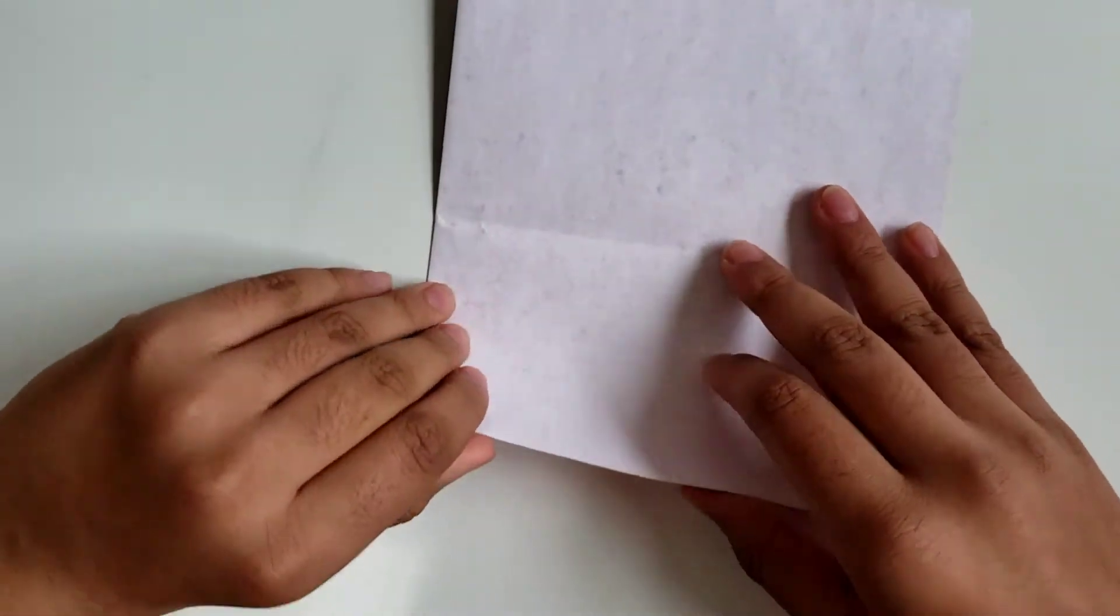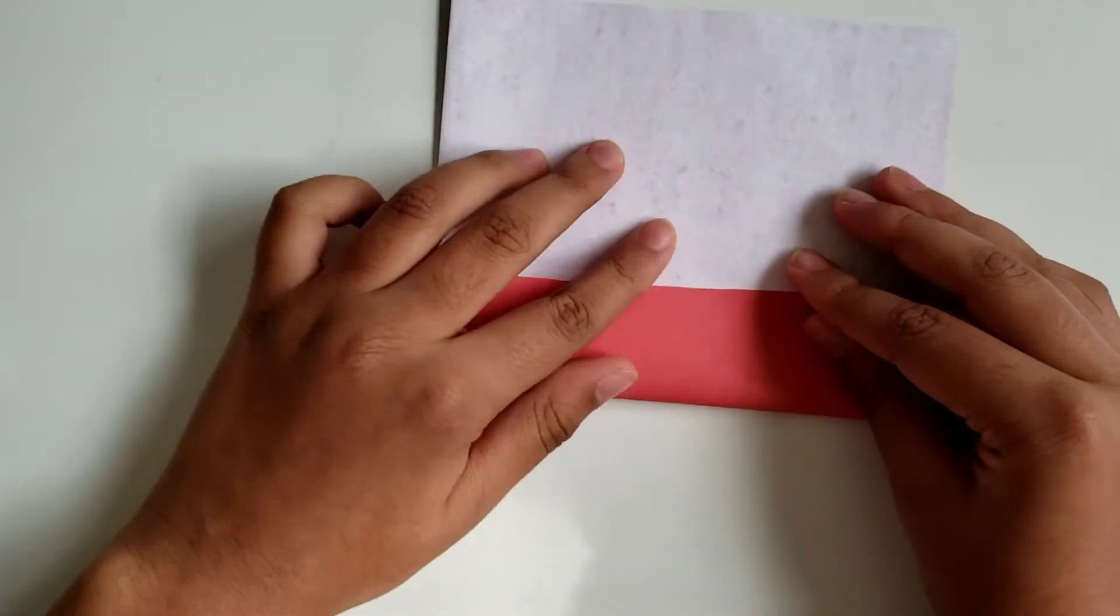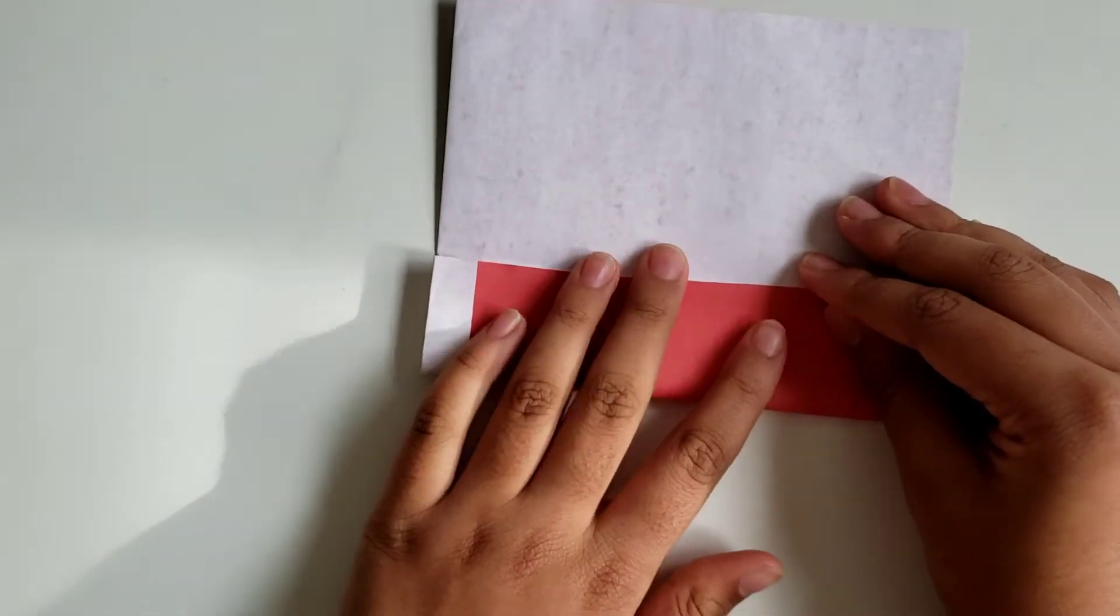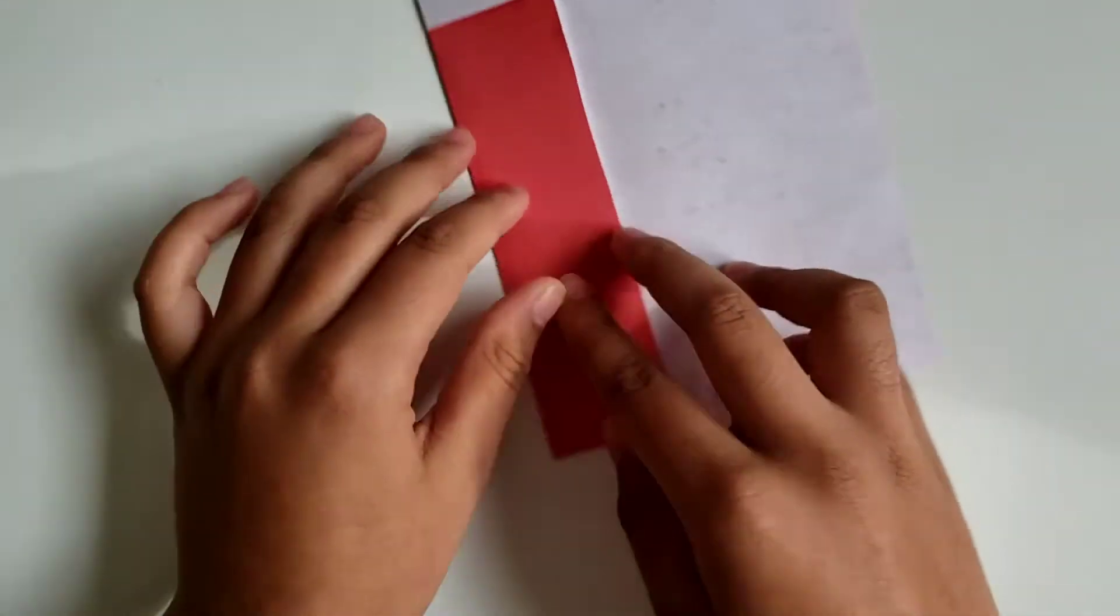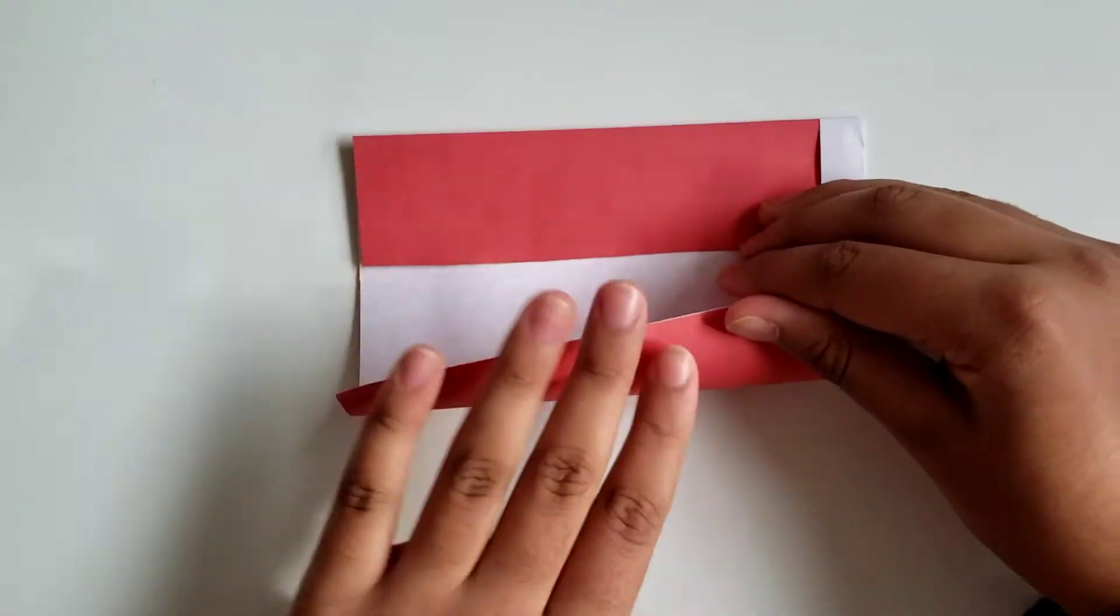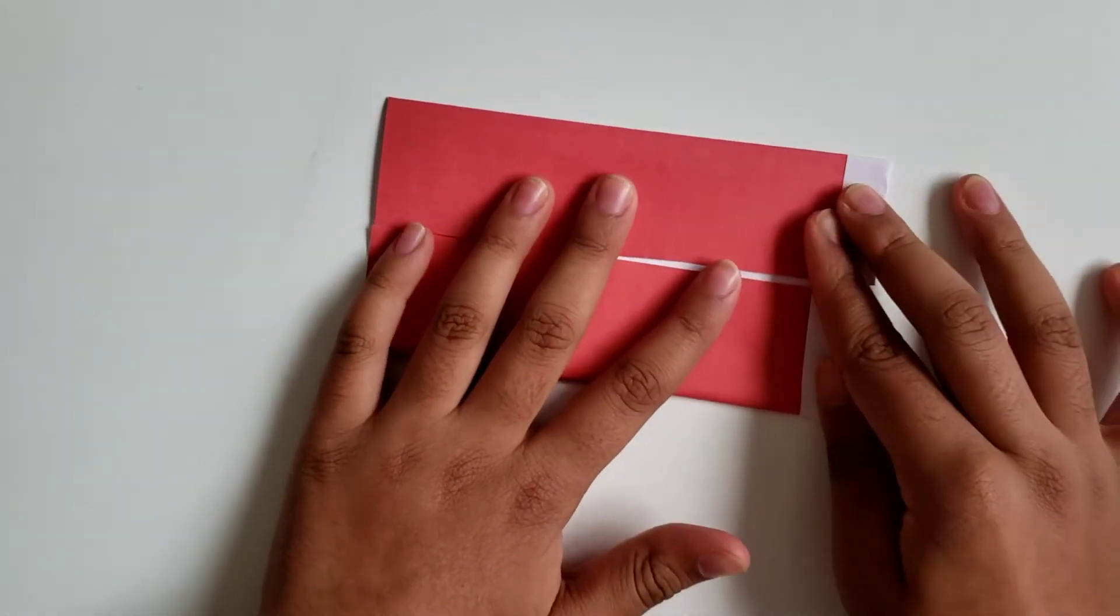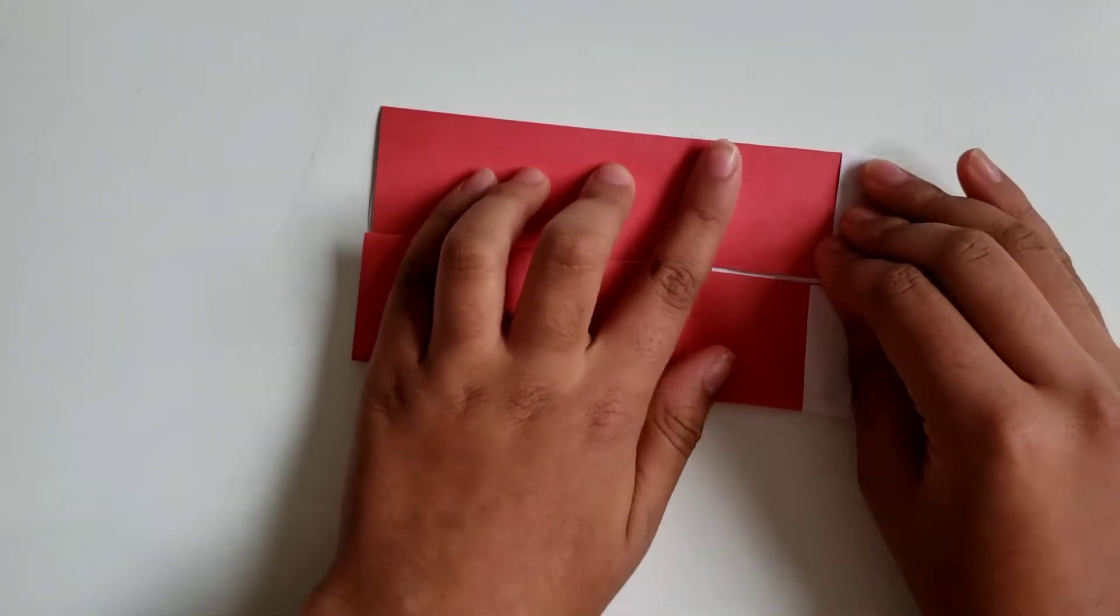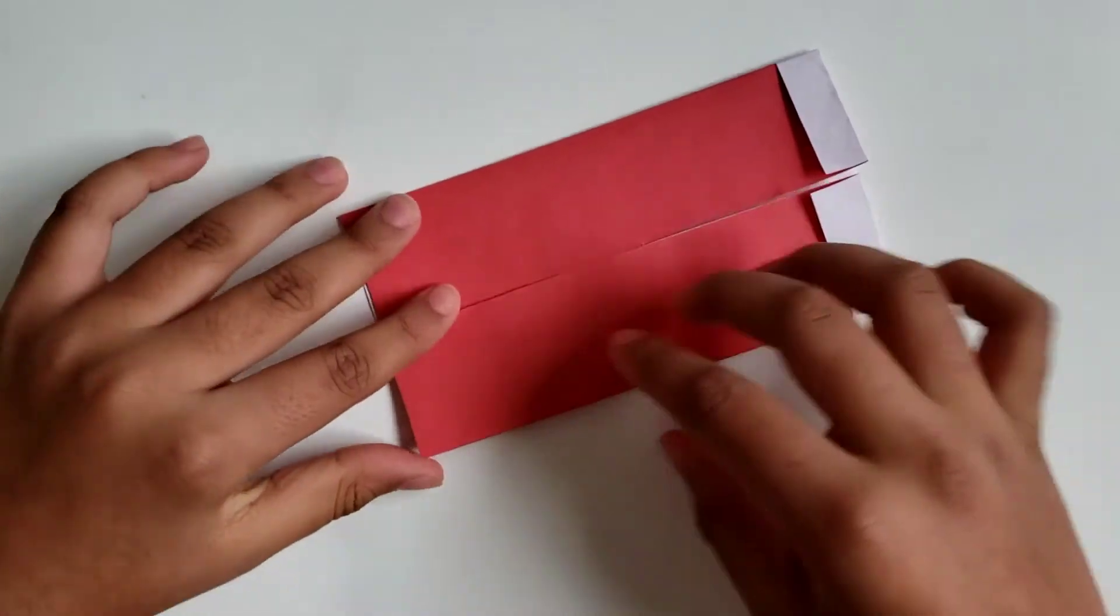Next we're going to take the other side and we're going to fold it inwards to the center crease. Now we're going to take this corner and we're going to fold it to this one. We'll crease well.